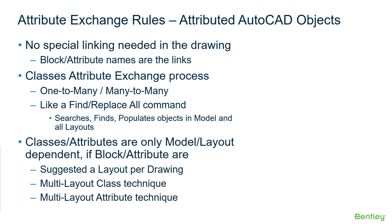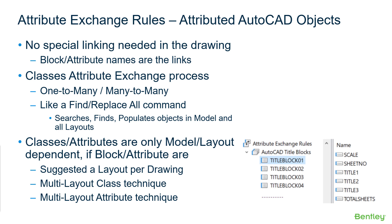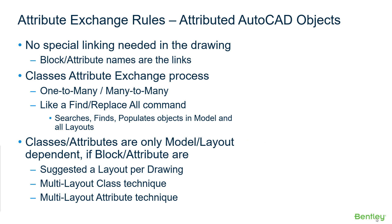For taking advantage of the automated attribute exchange process, it is suggested to have one title block layout per drawing. If attribute exchange is going to be used for title blocks with multiple layouts, there are two options. The first option is for each layout to have a uniquely named block that matches the attribute class for that specific layout — for example, 20 classes named title block 01 through title block 20 — each binding to a different property in the ProjectWise environment. This technique requires the ProjectWise environment to store every layout attribute data.